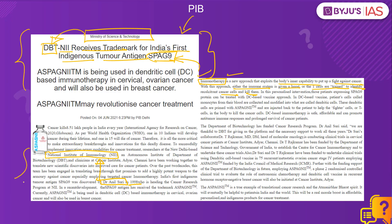Several other research institutions were also part of this project, and this antigen has recently received a trademark known as ASPAGNII — that is, antigen SPAG9-NII. It is used in DC-based immunotherapy, or dendritic cell immunotherapy, which can be useful in treating many forms of cancer.